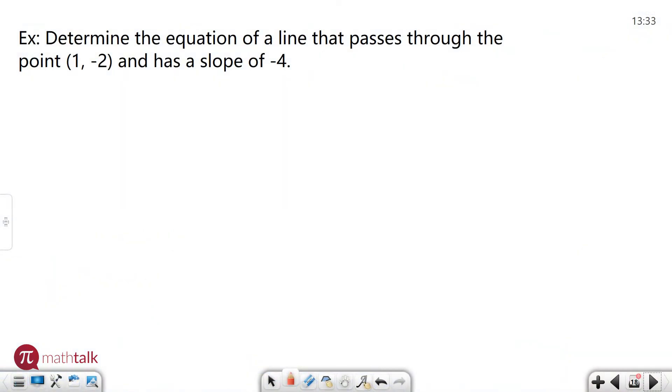Let's take that information and use it and apply it to a couple examples. We have a problem that says determine the equation of a line that passes through the point (1, -2) and has a slope of negative four. So I'm going to go ahead and write out my slope-intercept form: y equals mx plus b. I'm going to take the information that I have and plug it in.